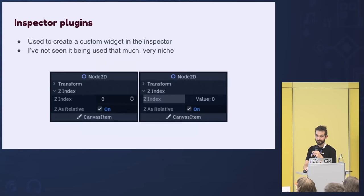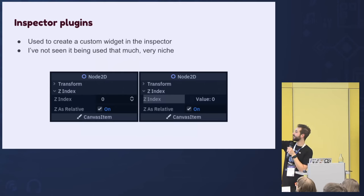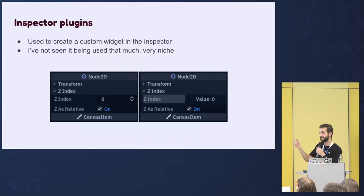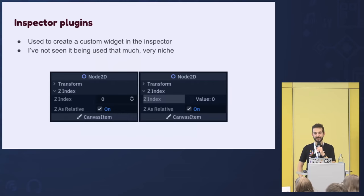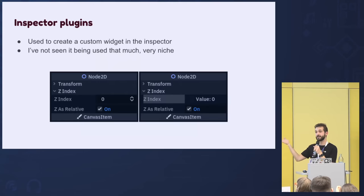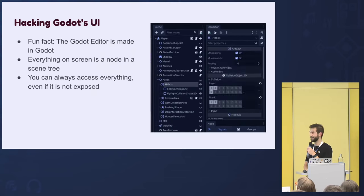There are also inspector plugins, which we don't use but they're worth knowing about. The inspector normally shows boolean selectors or number inputs, but inspector plugins let you make your own custom widgets that transform that data. I haven't seen this in many plugins — if you know a good use case, please tell me in the Q&A. But it's good that the option exists.